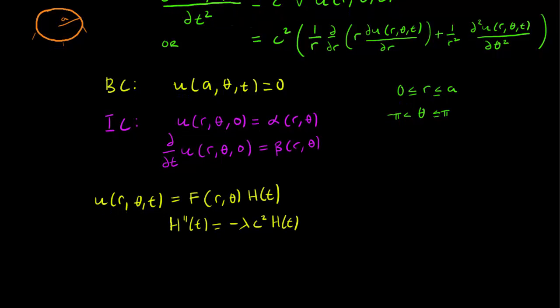And for the F variable, we get ∇²F(r,θ) + λF(r,θ) = 0. So everything initially looks quite the same.